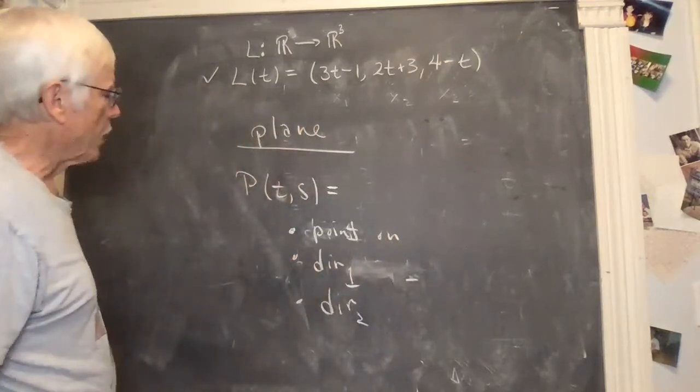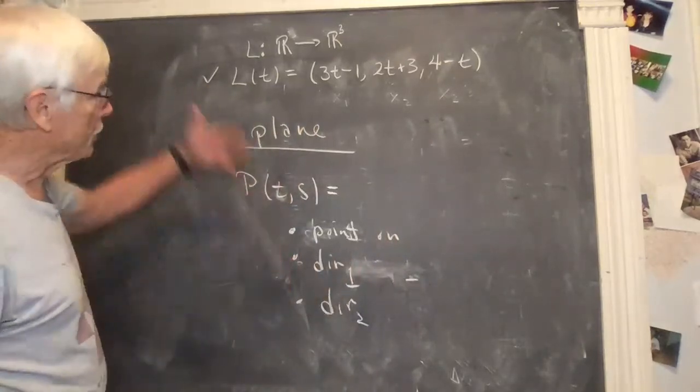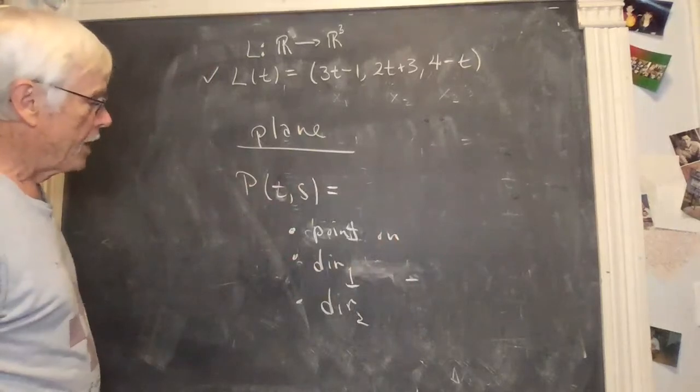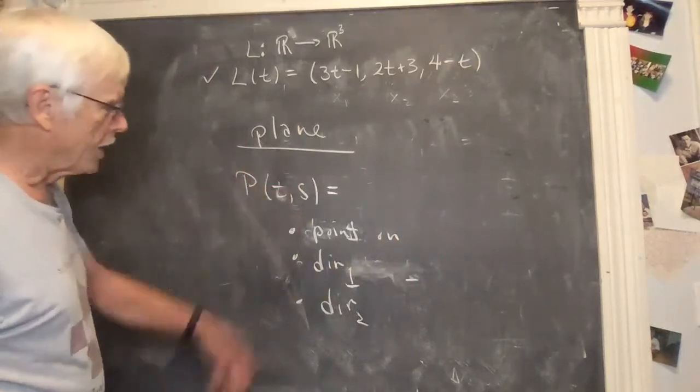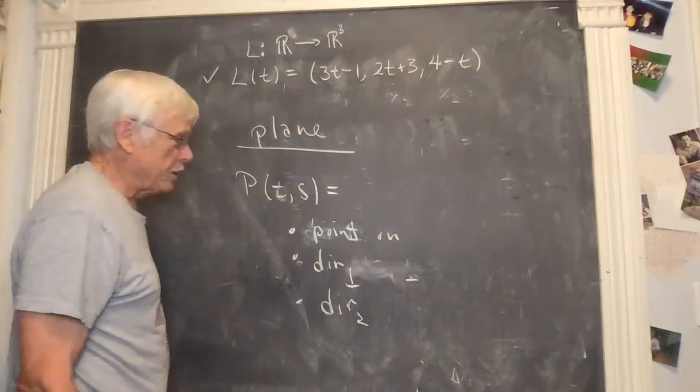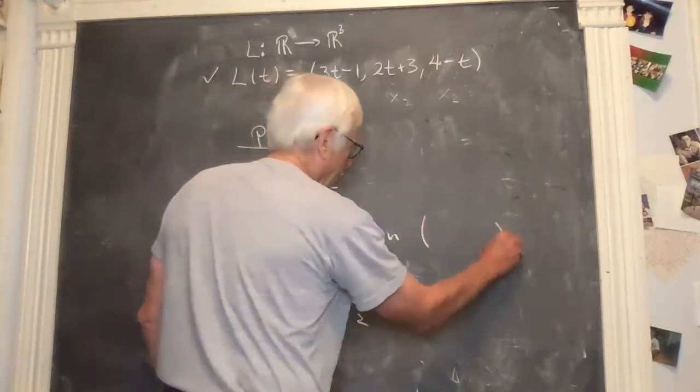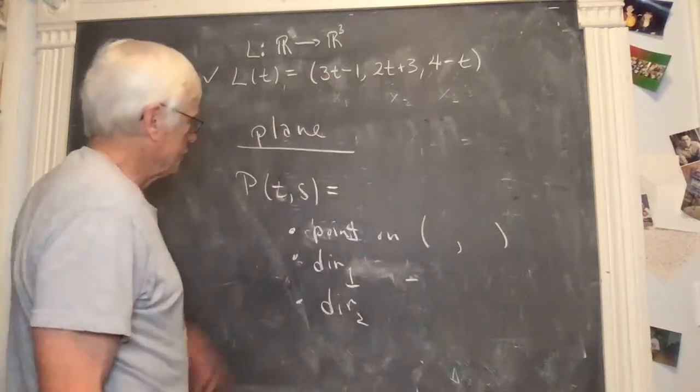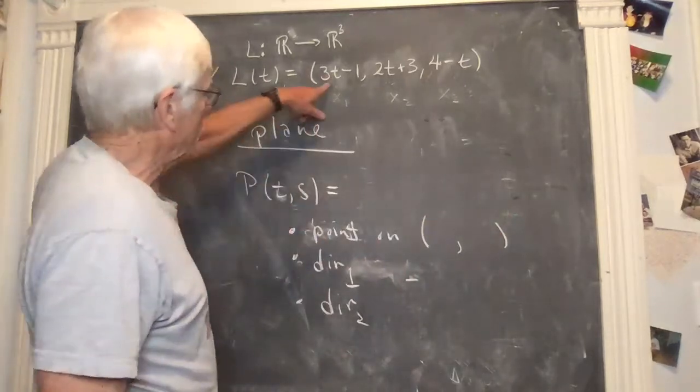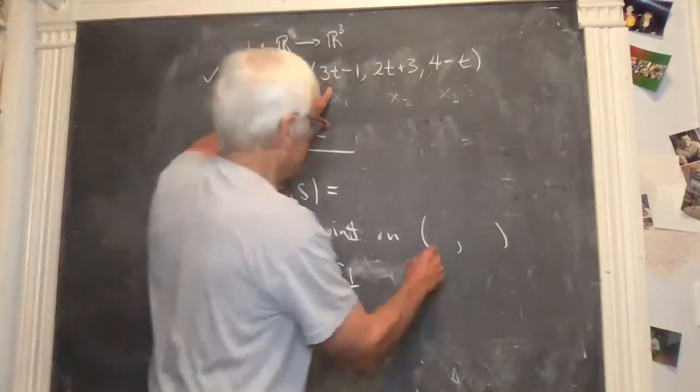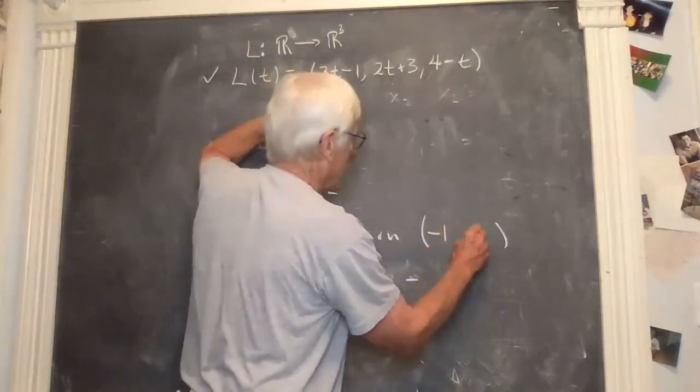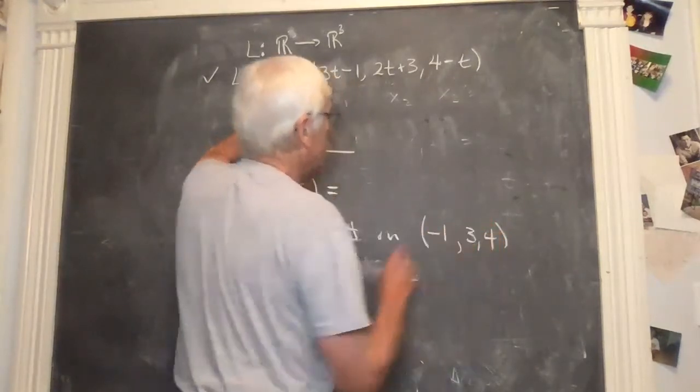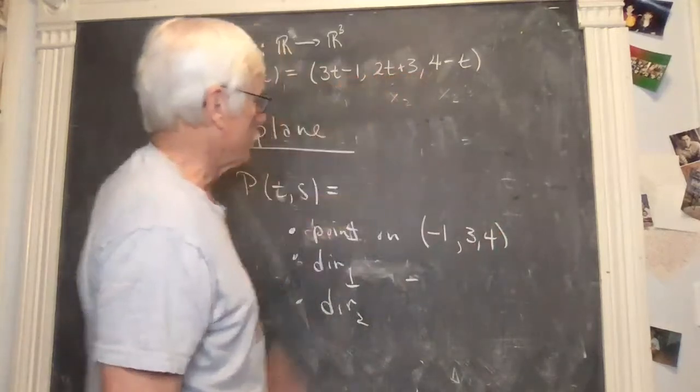Point on and two directions. Now, I want this plane to contain the line. And we already have a bunch of points on. So I'm going to make sure that it at least, it's going to have to contain every point of the line. So to find a point on the plane, I'm going to use any of the points of the line. And I think minus one, three, four is a point on the line that we found before by taking T equals zero.